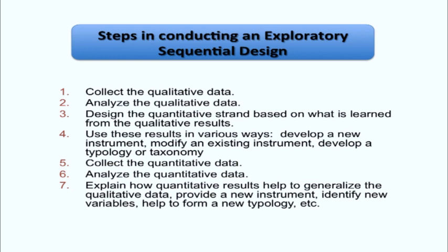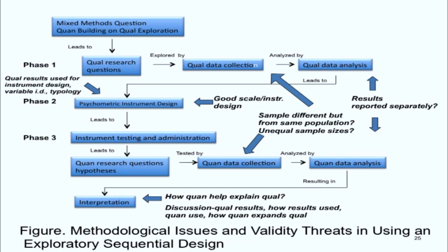In the final stage, you collect the quantitative data to test out the instrument — using an instrument as an example — then analyze the data, and explain how the quantitative results help to understand not only the qualitative themes at the beginning, but also provide a better instrument, a more useful intervention approach, or a more useful typology. I've drawn a picture of the process: starting with a mixed methods question, gathering data qualitatively, moving to the second phase of developing a psychometric instrument, and then phase three — actually testing and administering that instrument quantitatively.